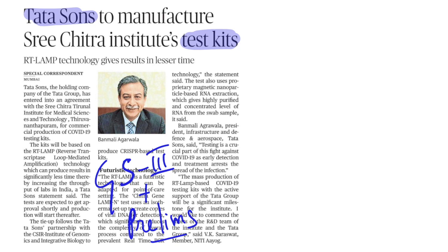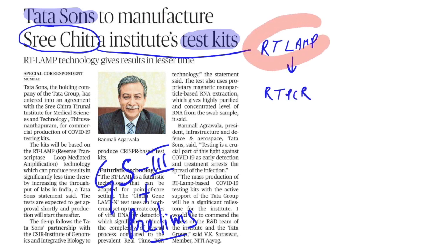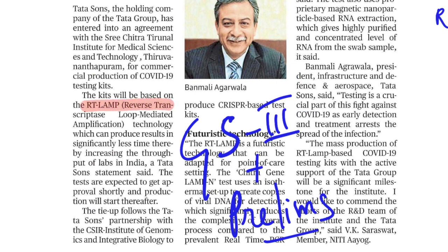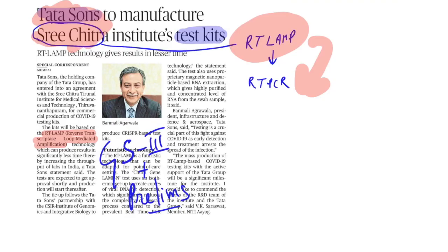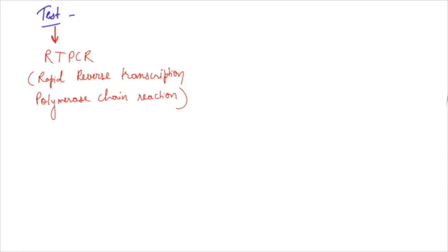Here is a news where Tata Sons will manufacture the testing kits for the COVID-19. Giving you certain background, recently the Shri Chitra labs had made a new technology for the testing that is called as RT-LAMP. RT-LAMP is little bit different from the traditional gold standard test that is RT-PCR and the advantage of RT-LAMP is that it is significantly faster than the RT-PCR test and thus swift testing could be carried in India.